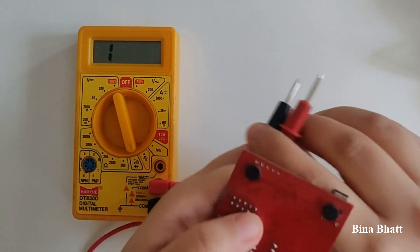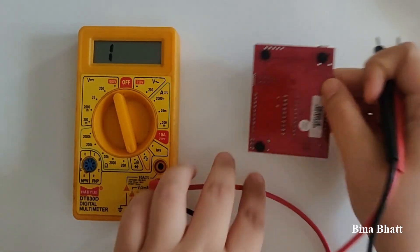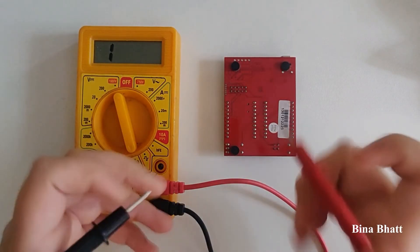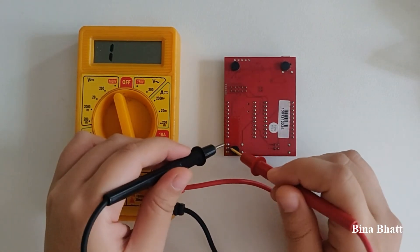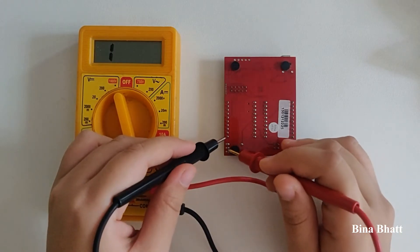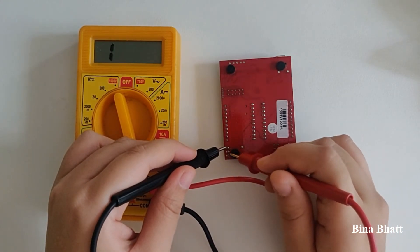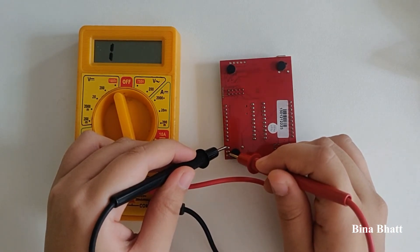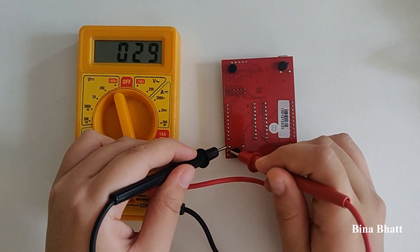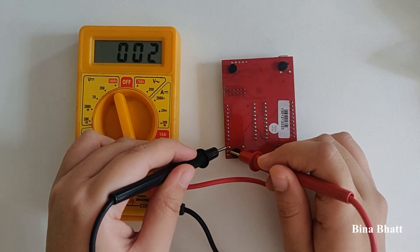Here I've got a PCB board. These three points are for ground, so let's check if there is continuity between them. You can hear a beep, which means these points are connected.